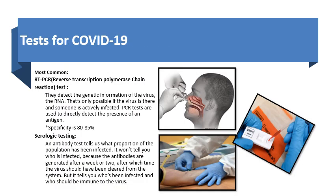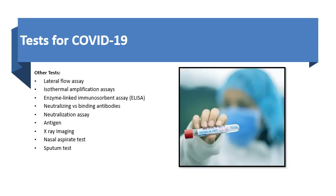The tests for COVID-19 include the molecular tests, also known as reverse transcription polymerase chain reaction tests, that tells us the presence of an antigen with a specificity of 80-85%. The serologic test, on the other hand, determines the proportion of population that has been infected, who has been infected, and who could be immune to the virus as well. Some of the others include enzyme-linked immunosorbent assay, nasal aspirate test, and the sputum tests.